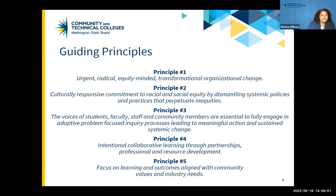In terms of our principles, the first principle is that this is urgent work. The urgency can't be stressed enough — a lack of urgency sends a message, especially when we think about our vision. We can't wait for racial, social, and economic justice, and recognizing the way that education is connected there is huge. So it's urgent, radical, equity-minded, transformational organizational change — not just changing one or two practices, but really thinking about how we do our work and how we do our work together.